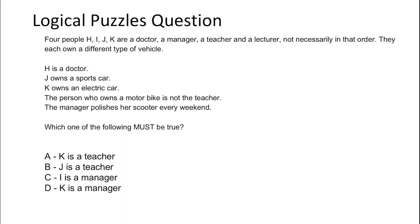Let's look at the first question. Four people — H, I, J, K — are a doctor, manager, teacher, and lecturer, not necessarily in that order. They each own a different type of vehicle. H is a doctor. J owns a sports car. K owns an electric car. The person who owns a motorbike is not the teacher. The manager polishes a scooter every weekend. Which one of the following must be true?